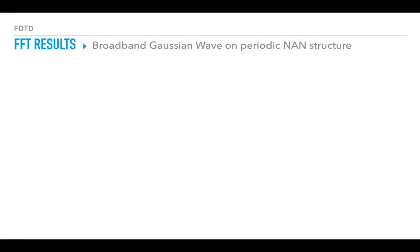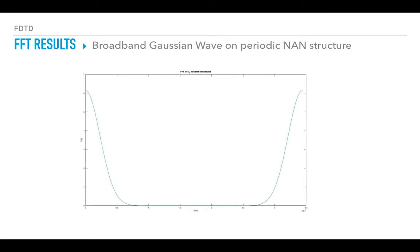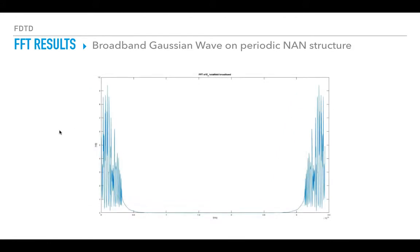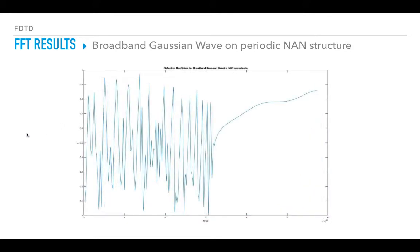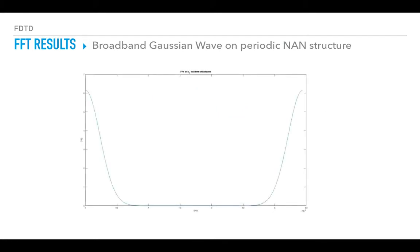Now let's look at the FFT results for the broadband Gaussian wave. This is the FFT of the Gaussian pulse — the incident wave — which goes up to 0.6×10^13 Hz. This is the FFT of EZ total, which equals E incident plus E scattered. The reflection coefficient is E total minus E incident, and taking the FFT of that gives us values from 0 to 1 for each frequency. I have limited the range to 0 to 0.6×10^13 Hz since that's where the signal content exists.